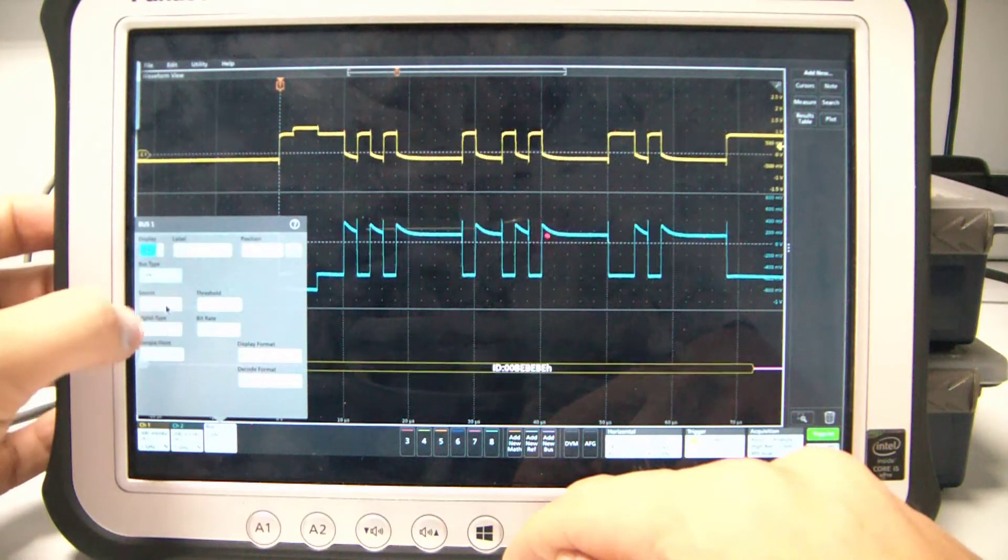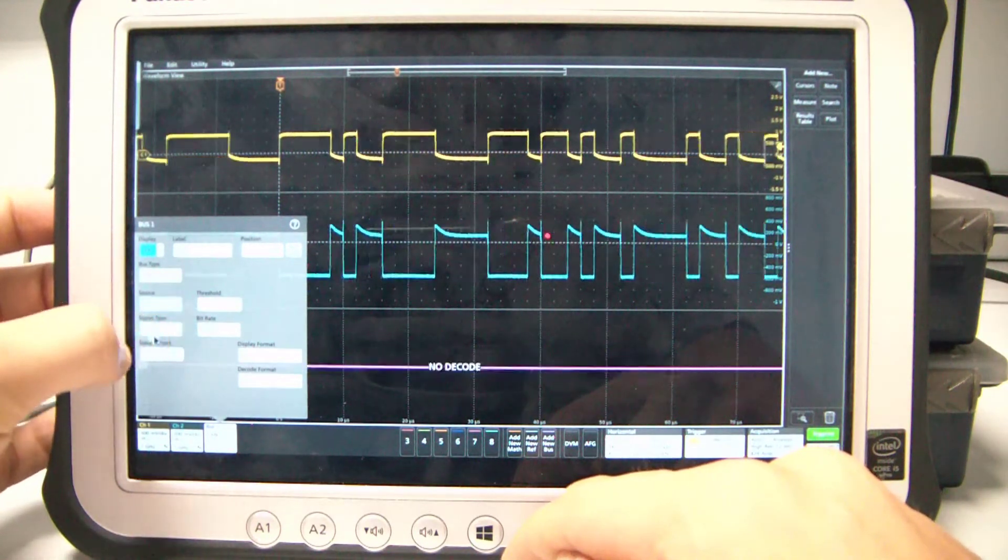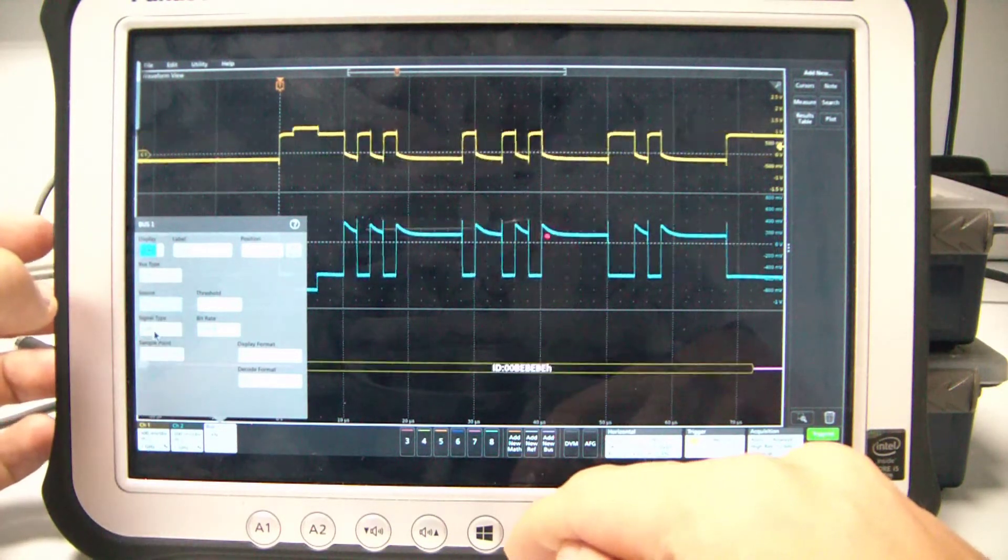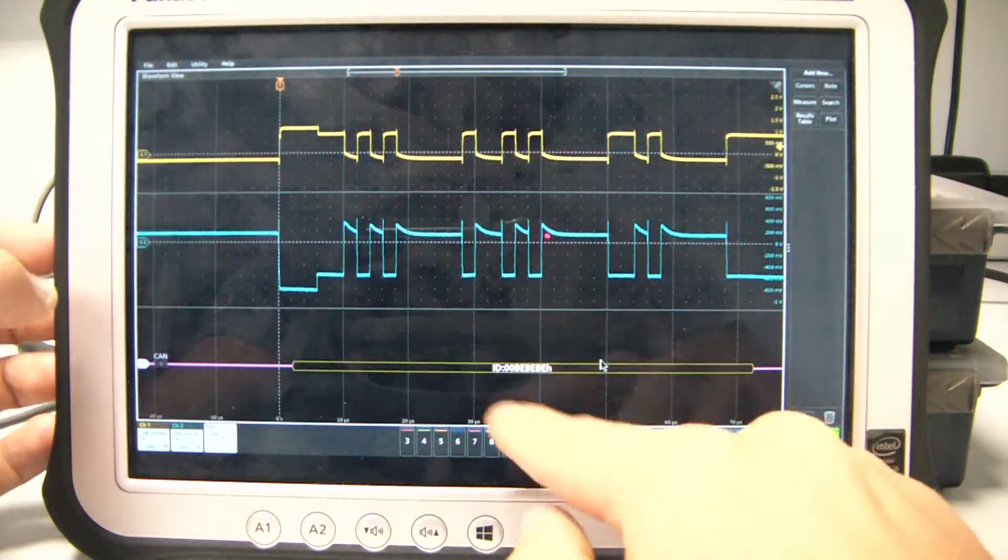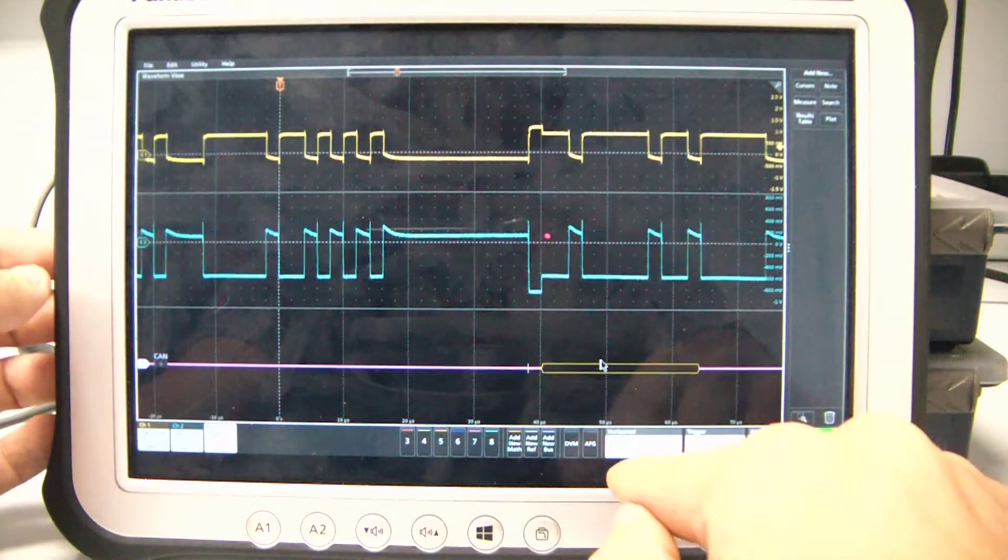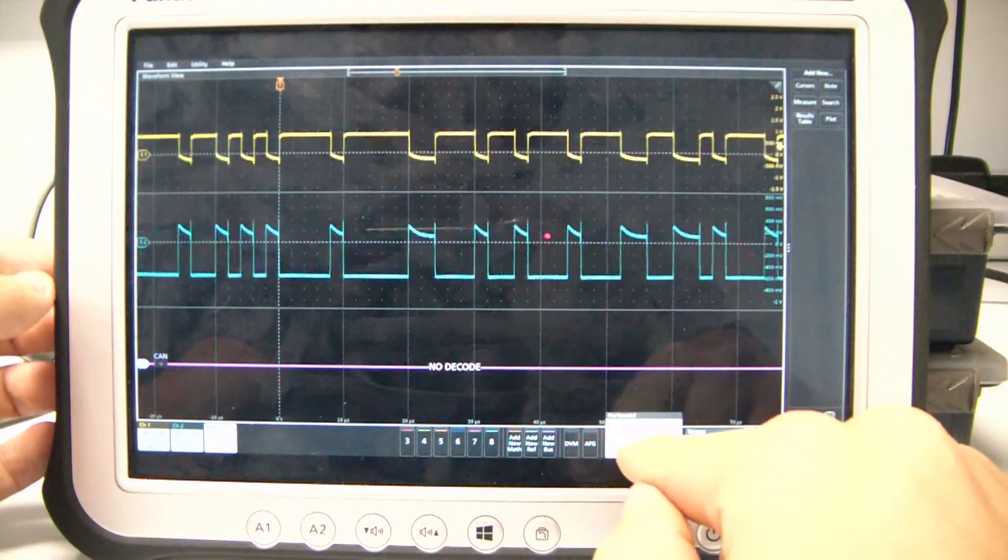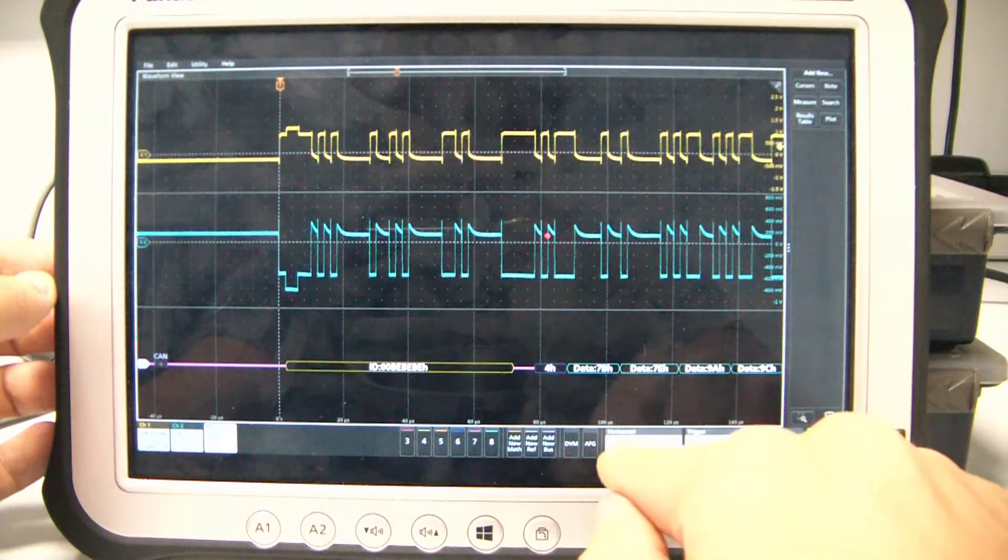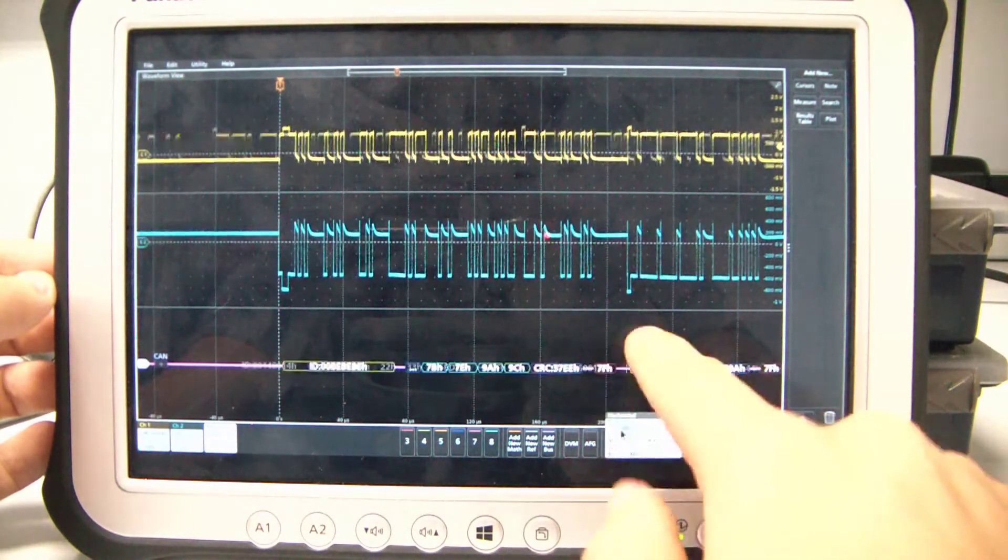Channel 1 is CAN high. Channel 2 is CAN low. OK, and we can see the packets coming. So I can take a little longer acquisition. And we can see here the packets going on.